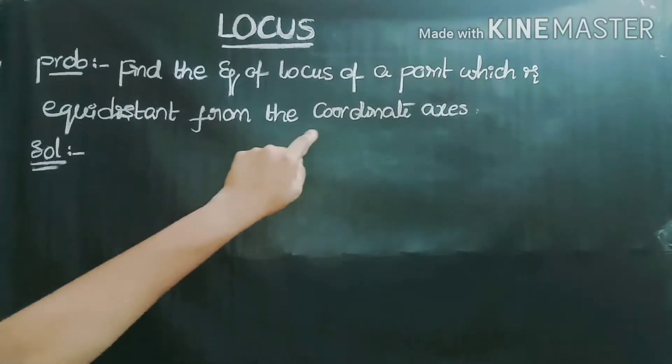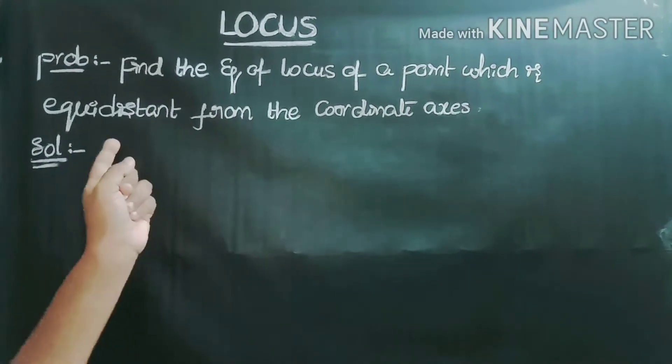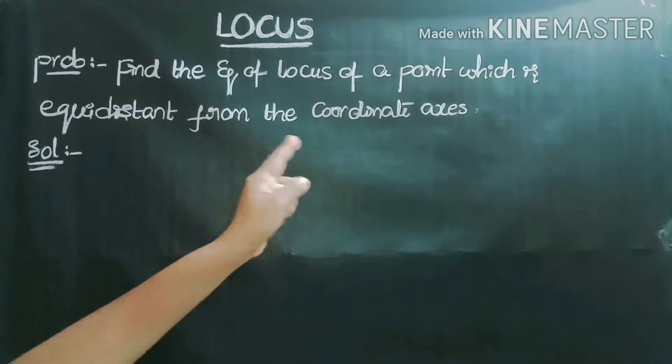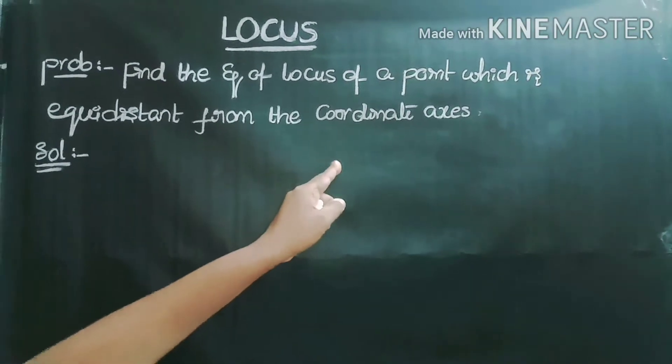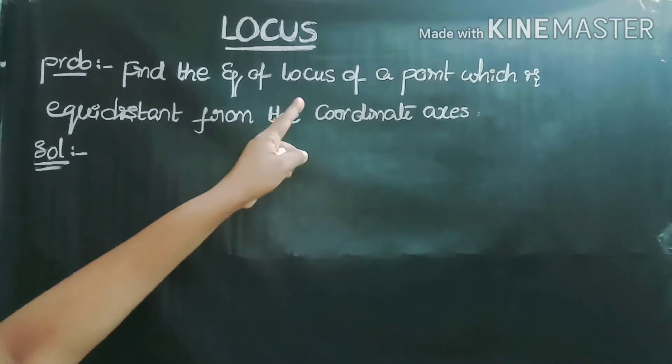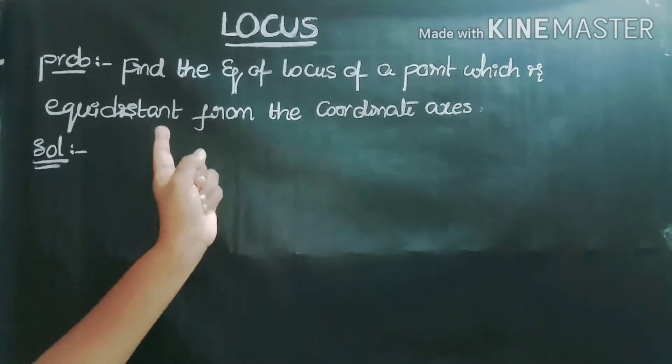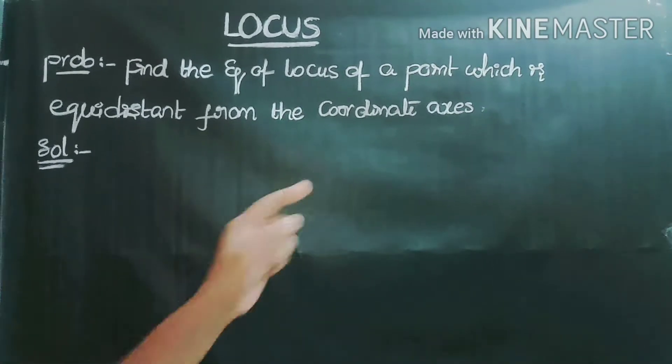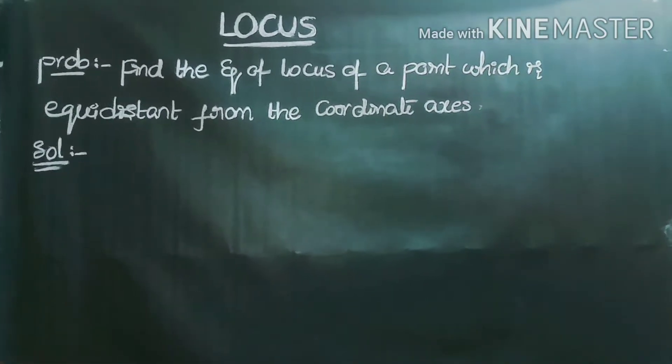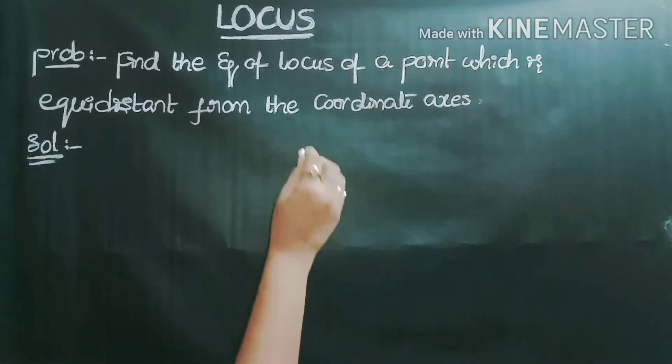Find the equation of locus of a point which is equidistant from the coordinate axes. We need to find the equation of locus of a point where the given condition is that the point is equidistant from the coordinate axes.